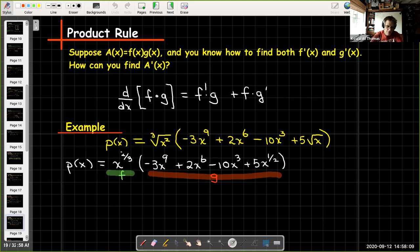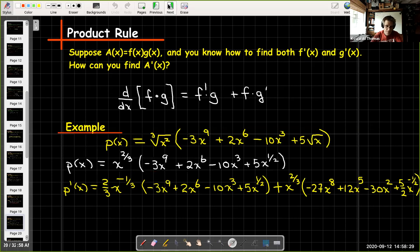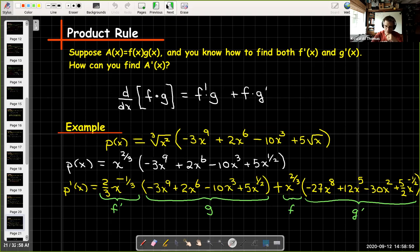My f would be the function on the outside, the x raised to the two-thirds power. And my g would be the function on the inside of the parentheses. And then we can apply the power rule to each part when we're using the product rule. So let's think. Okay. And so we're going to leave this as it is written. We're not going to try to remove parentheses and we're not going to try to collect like terms.